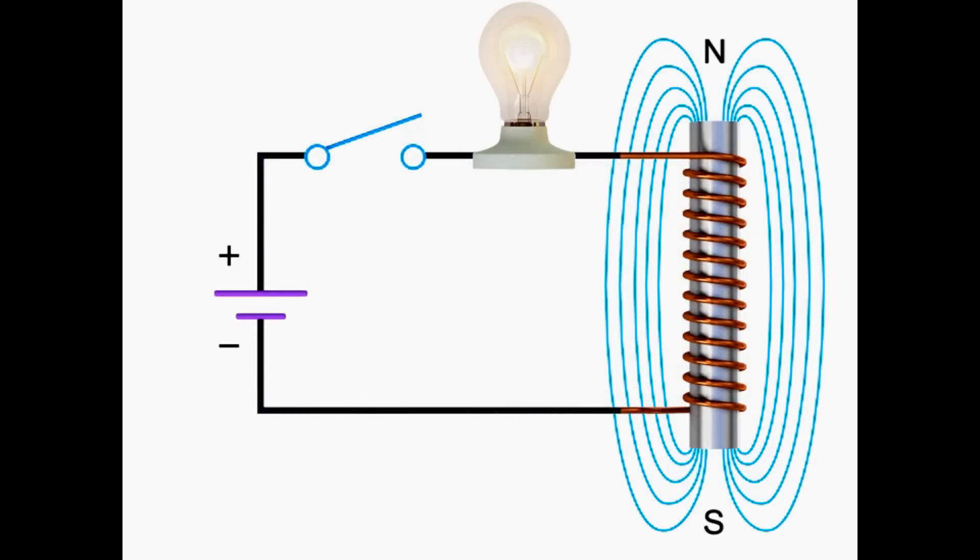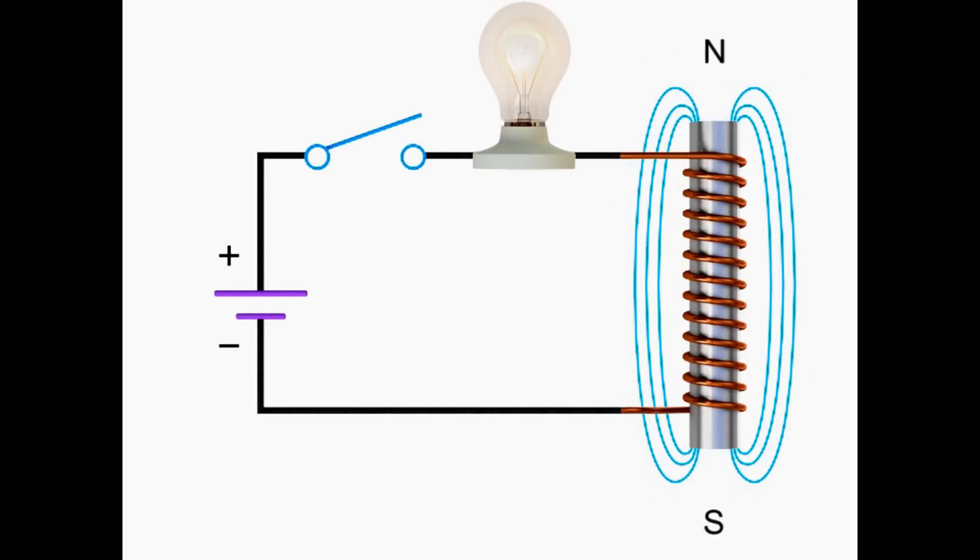If you open the switch and stop the flow of current from the source, the electromagnetic field will diminish rapidly and simultaneously release stored energy in the form of voltage. It will actually generate enough voltage to cause a spark across the switch as it opens.